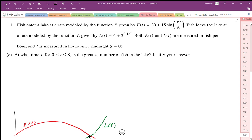Question number one says: at what time t, for 0 ≤ t ≤ 8, is the greatest number of fish in the lake? Justify your answer.